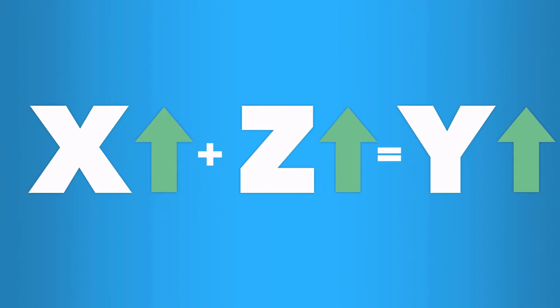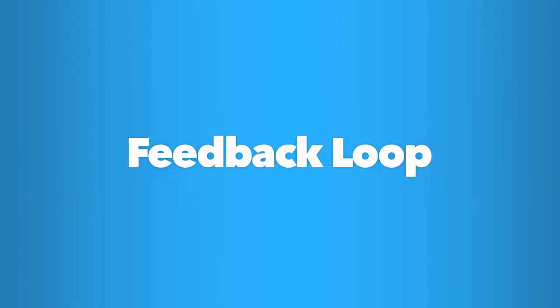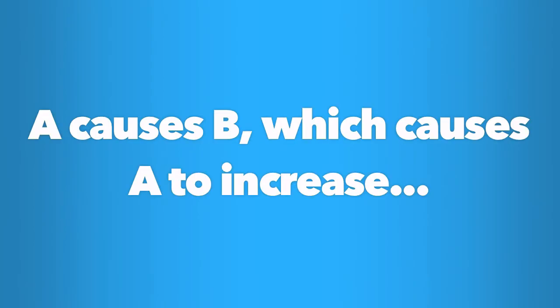The idea of a feedback loop describes a causal relationship in which two factors actually cause each other. A causes B, then B causes A to increase, which leads to an increase in B, and so on.